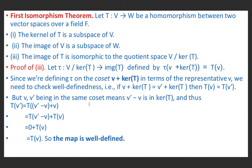If v + ker(T) = v' + ker(T), then v' - v ∈ ker(T). So T(v') = T((v' - v) + v) = T(v' - v) + T(v). Since v' - v is in ker(T), T(v' - v) = 0. Therefore T(v') = 0 + T(v) = T(v). So τ is well-defined.